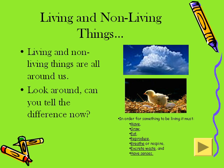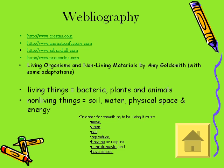Living and non-living things are all around us. Can you tell the difference now? In order for something to be living, it must move, grow, eat, reproduce, breathe or respire, excrete waste, and have senses. Remember, living things include bacteria, plants, and animals. Non-living things include soil, water, physical space, and energy.